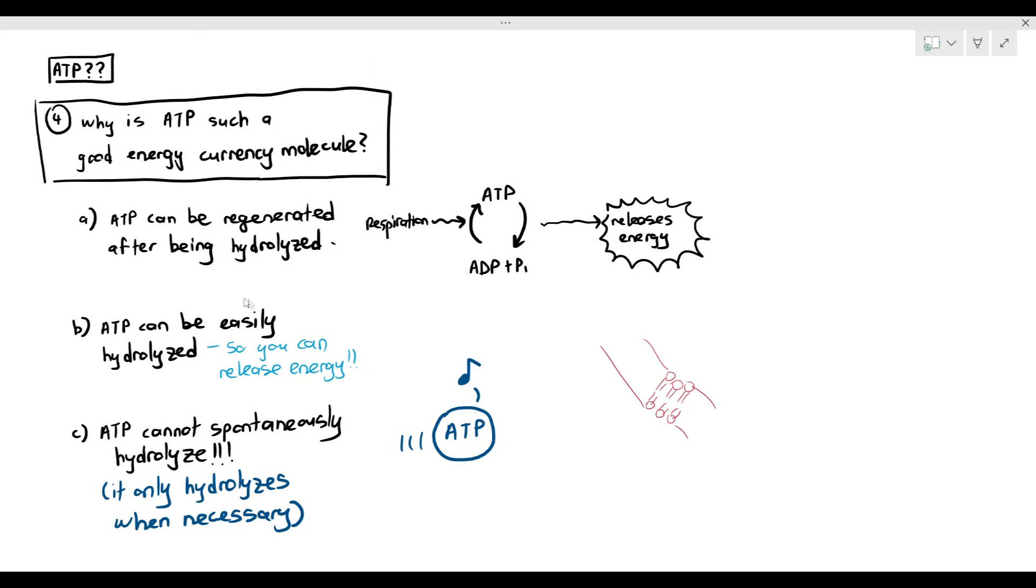For example, let's look at an ATP molecule here. And I'm also drawing a cell surface membrane with a protein pump. Now let's say that protein pump needs energy to carry out active transport. So the ATP wants to provide the energy, but for the ATP to provide energy, it has to attach to an enzyme called ATPase.